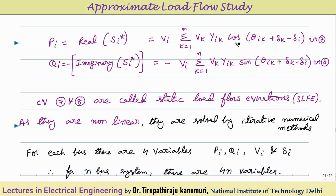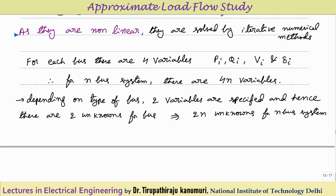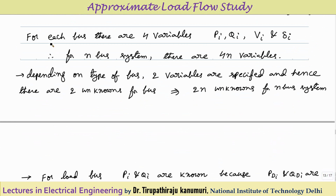For each bus there are 4 variables: Pi, Qi, |Vi|, and δi. For an n-bus system, there are 4n variables total. Depending on the type of bus, 2 variables are specified, leaving 2 unknowns per bus, giving a total of 2n unknown variables for an n-bus system.